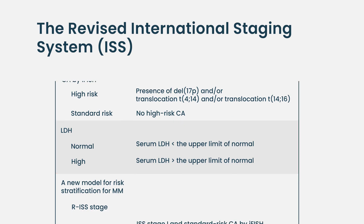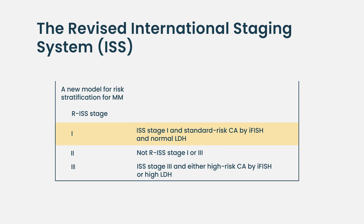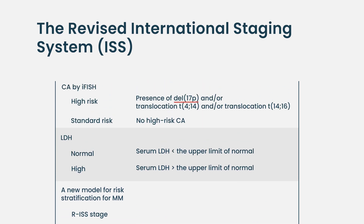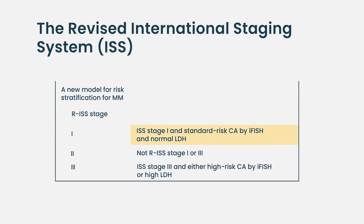In very simple terms, revised ISS stage one is what the old ISS stage one was — that is, low beta-2 microglobulin and normal to high albumin. But in addition, these patients should also have normal LDH and should not have any high-risk chromosomal abnormalities. There are three of those incorporated in the revised ISS staging system: deletion 17p, translocation 4;14, and translocation 14;16. Patients should not have any of these three and should have normal LDH, in addition to meeting the old ISS stage one criteria.